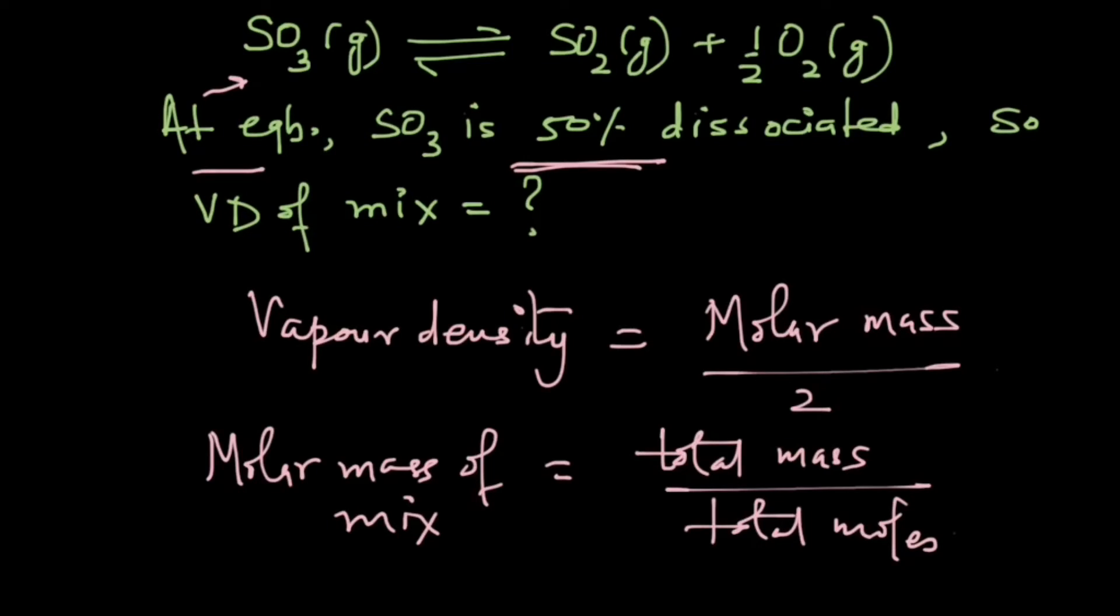So let's see how we can solve this question. Let's write the reaction once again. We have SO3 which is a gas, and it is decomposing into SO2 gas and half mole oxygen gas, and the reaction is balanced.